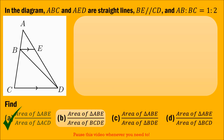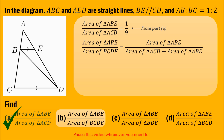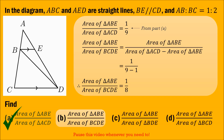Now that we have found the area of triangle ABE over the area of triangle ACD from part A, we can use this to find the area of triangle ABE over the area of trapezium BCDE. BCDE is the big triangle ACD minus the small triangle ABE, so the fraction will be 1 over 9 minus 1, giving us the area of triangle ABE over the area of BCDE as 1 over 8.